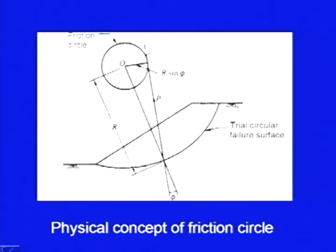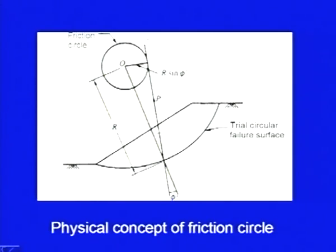This is what we had discussed last time. The reason is obvious: because this angle is φ' and here this is the radial vector, so this distance comes out to be r·sin(φ'). This line should touch it tangentially — this is what we have discussed. So this was the friction circle.